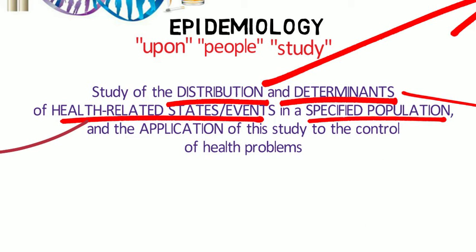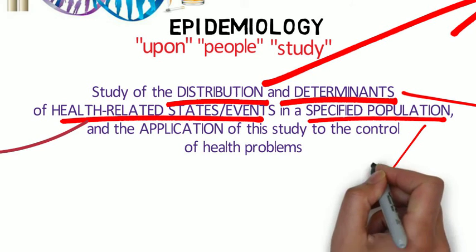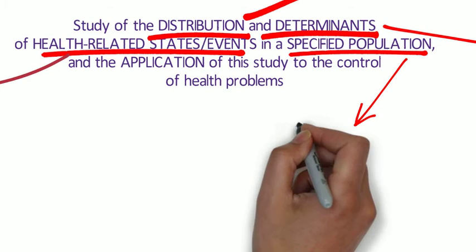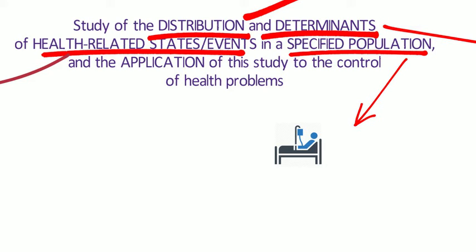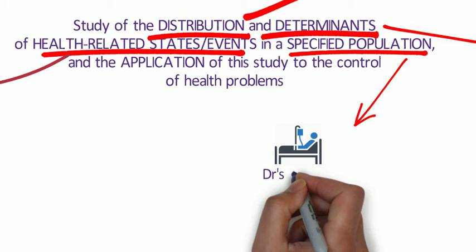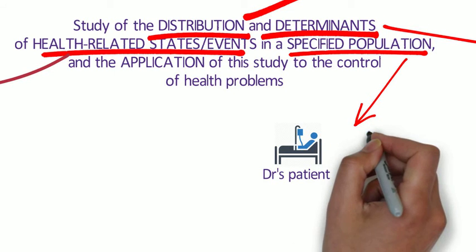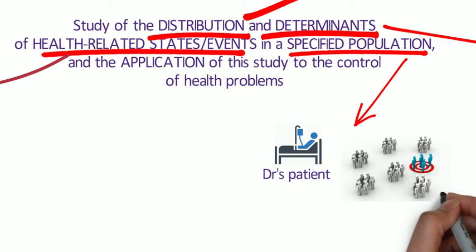Although epidemiologists and direct health care providers, such as clinicians, are both concerned with the occurrence and control of disease, they differ greatly in how they view the patient. The clinician is concerned about the health of an individual, while the epidemiologist is concerned about the collective health of the people in a community or population. In other words, the clinician's patient is the individual and the epidemiologist's patient is the community.